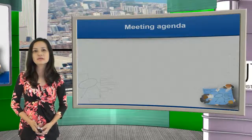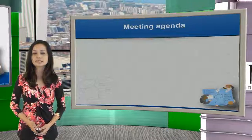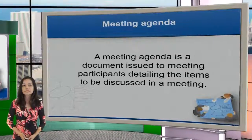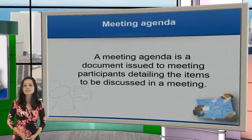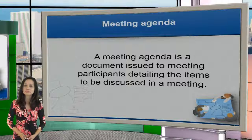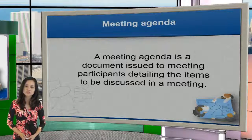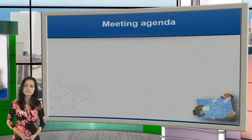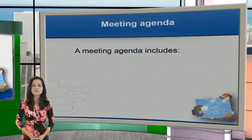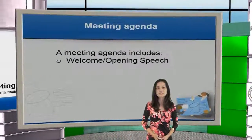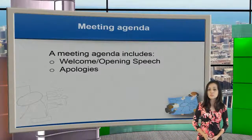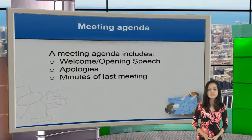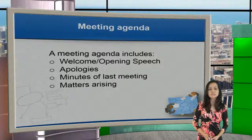The next meeting document is the meeting agenda. The meeting agenda is a document issued to meeting participants detailing the items to be discussed in a meeting. For a meeting agenda we usually include things like opening or welcoming speech, apologies, minutes of the last meeting, and matters arising.